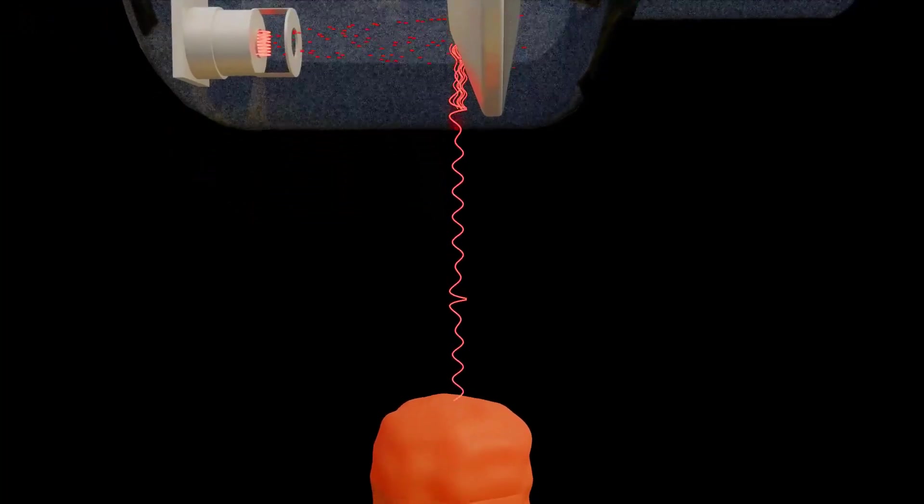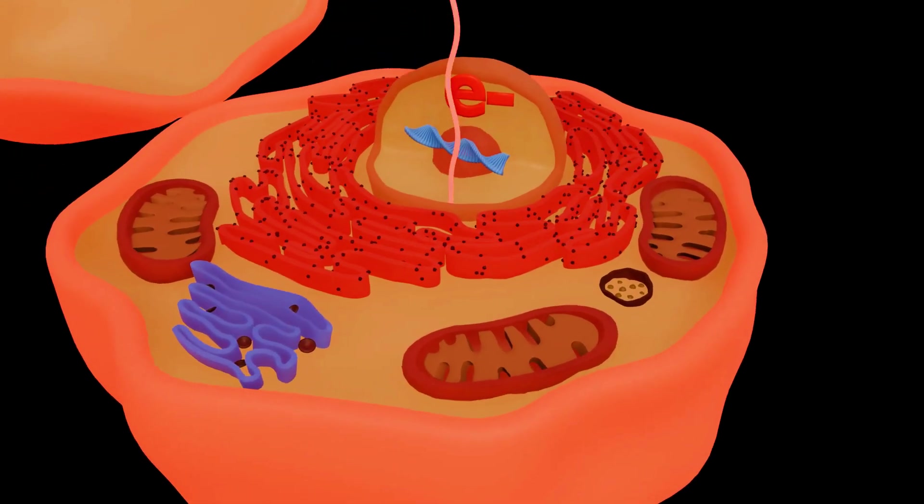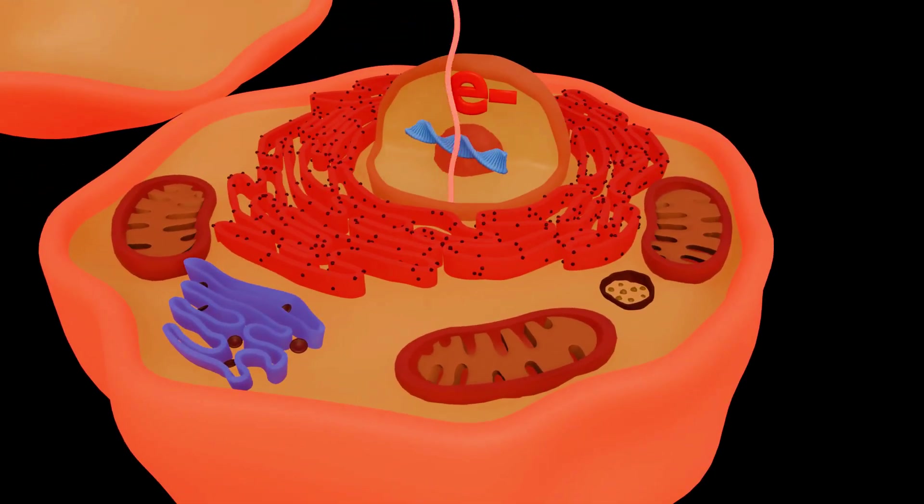When X-rays strike our body cells, their short wavelength enables them to ionize the cells. This ionization disturbs the DNA within the cells, which serves as the blueprint of our body.